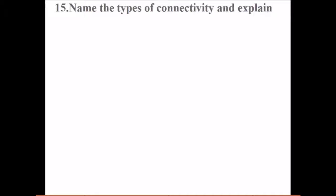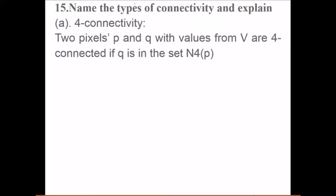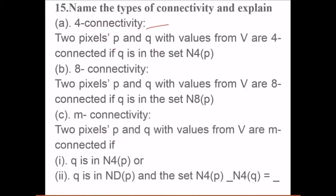Name the types of connectivity and explain. We have 4-connectivity, 8-connectivity, and m-connectivity. 4-connectivity means two pixels p and q with values from V are 4-connected if q is in the set of N4(p). If this is one point, it has 4 neighbors: north, south, east, and west. This is connected to this if it belongs to N4, which is 1, 2, 3, 4.